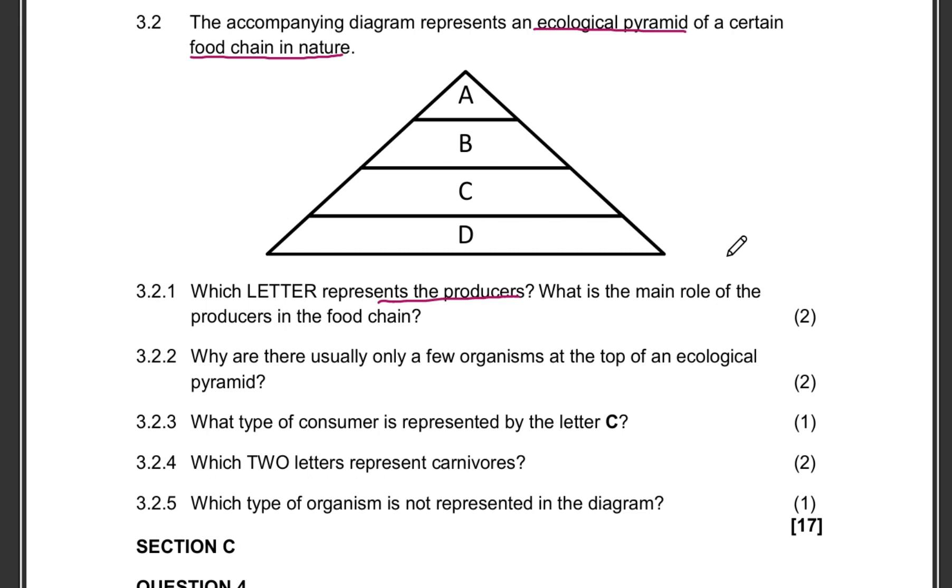So from the letters that you are given, question 3.2.1 is asking us which letter represents the producers. Between A, B, C, and D, which letter represents the producers? That's the first part of the question and the second part is asking us what is the main role of the producers in the food chain.